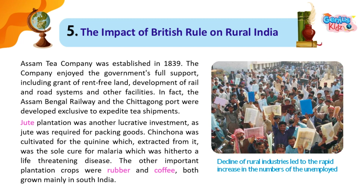Jute plantation was another lucrative investment, as jute was required for packing goods. Cinchona was cultivated for the quinine extracted from it, which was the sole cure for malaria, hitherto a life-threatening disease. The other important plantation crops were rubber and coffee, both grown mainly in South India.